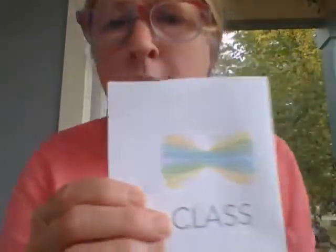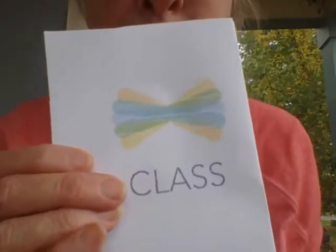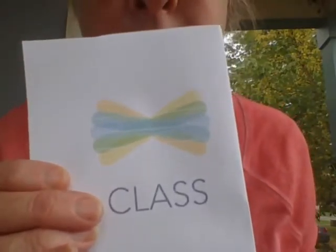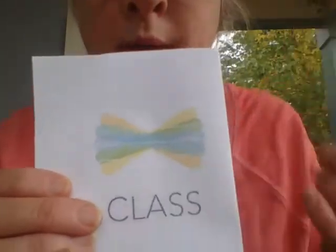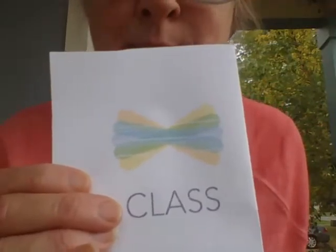Step number one is you will probably want to use a cell phone. And once you get your cell phone, you are going to want to go to the app store and you are going to want to download the Seesaw Class app that looks like this. It's the rainbow bow and the word class.